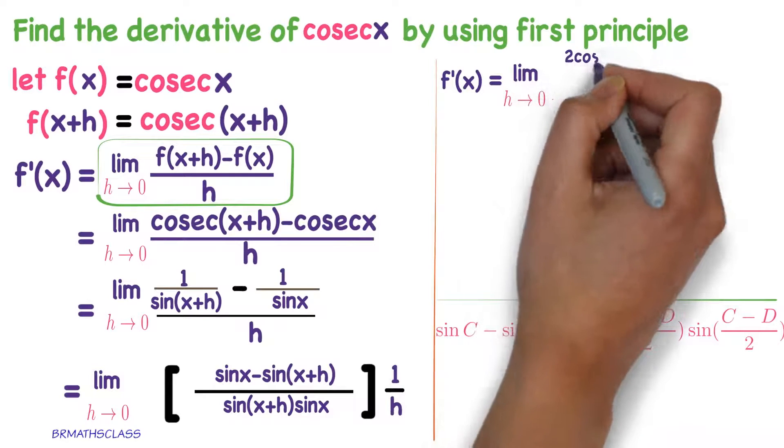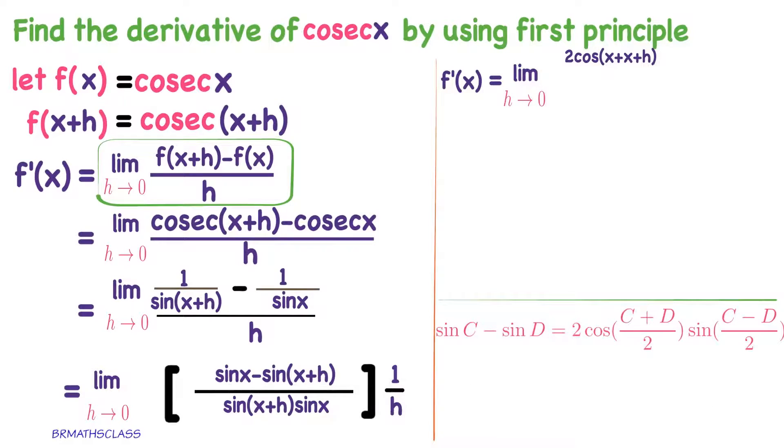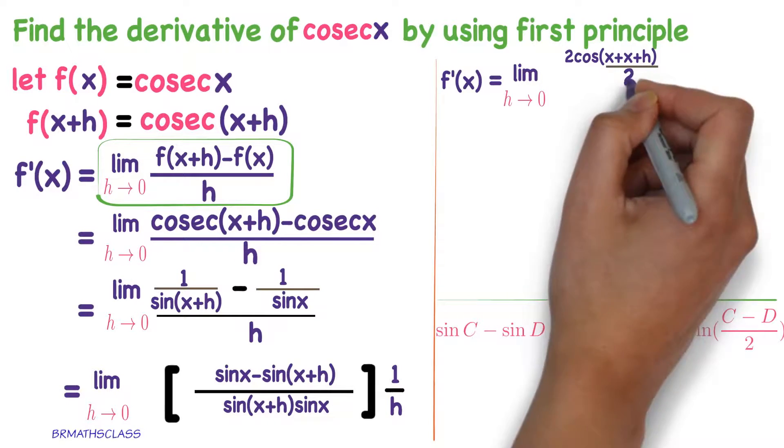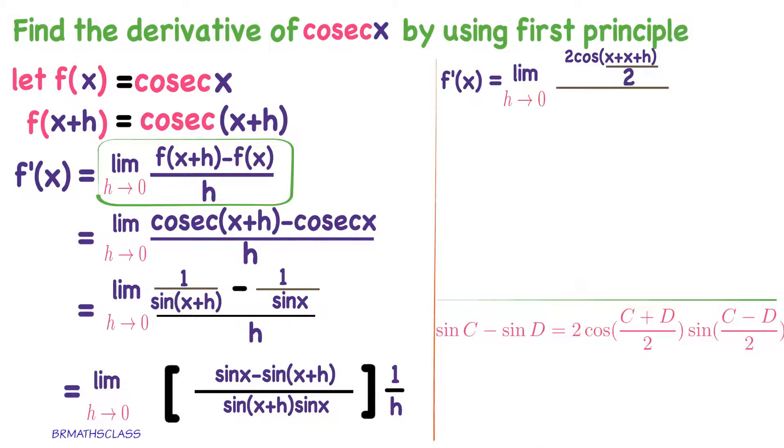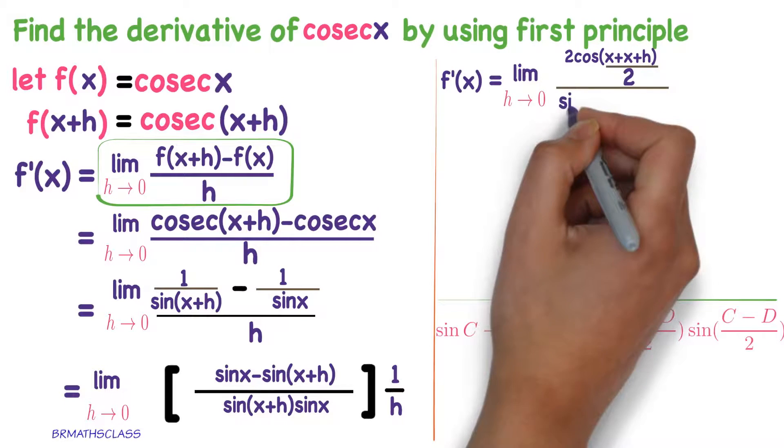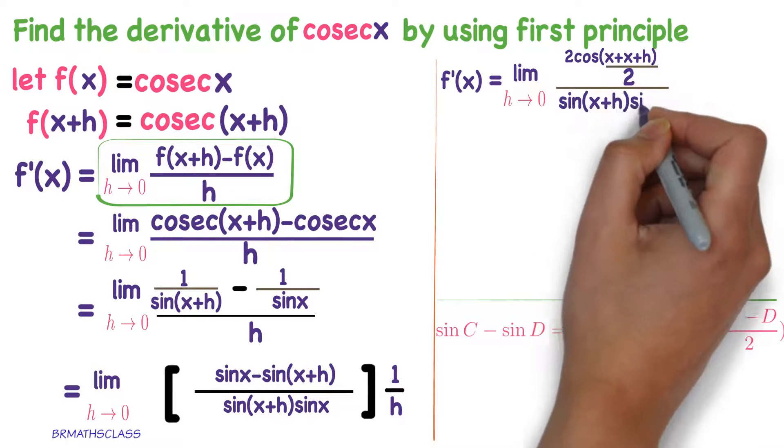See here. 2 cos c plus d by 2. C is x, d is x plus h. 2 cos c plus d by 2. And now I am writing the denominator part. Simplification will be easy. Sin x plus h into sin x.